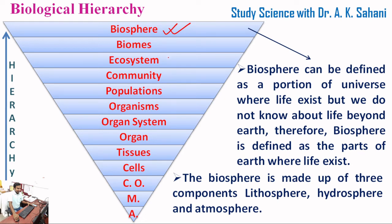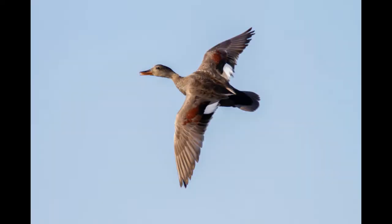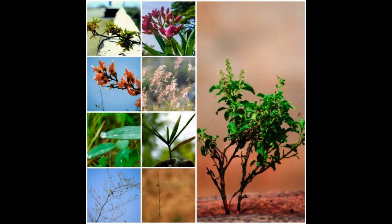The uppermost level of the biological hierarchy is biosphere. Biosphere can be defined as the portion of the universe where life exists, but since we do not know about life beyond Earth, biosphere is defined as the parts of Earth where life exists. The biosphere is made up of three components: lithosphere, hydrosphere, and atmosphere.